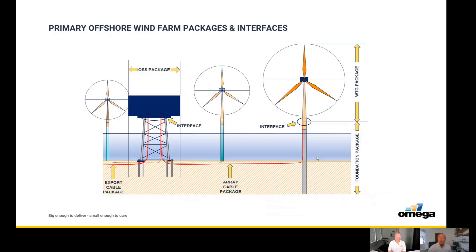These primary items all together are referred to as a singular position on a grid structure forming the overall farm layout. The power generated from the turbine is taken via array cables to an offshore substation, known as an OSS or an ESP depending on which side of the Atlantic you're on. This gathers and may transform the power before it is sent to shore via export cables.